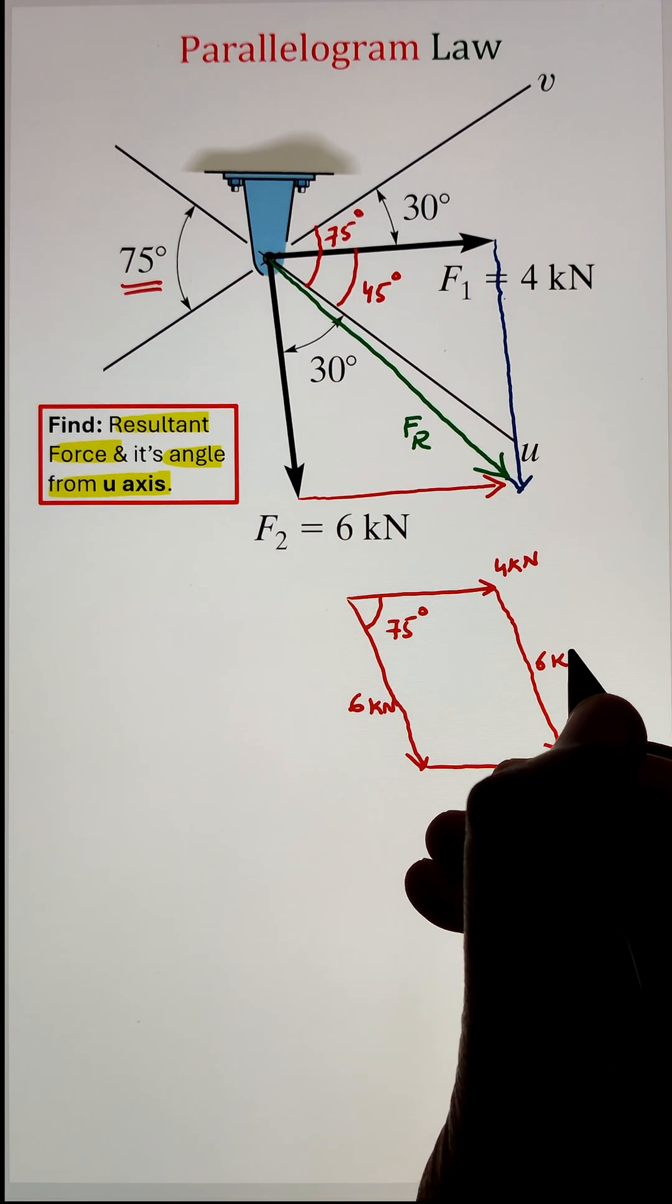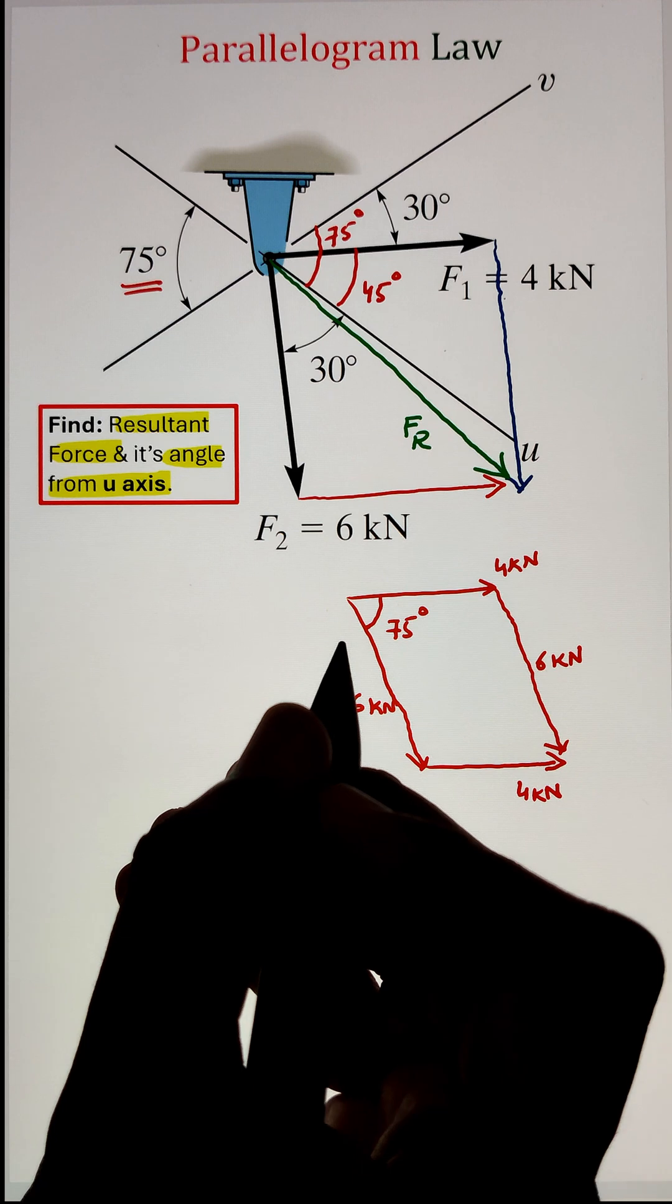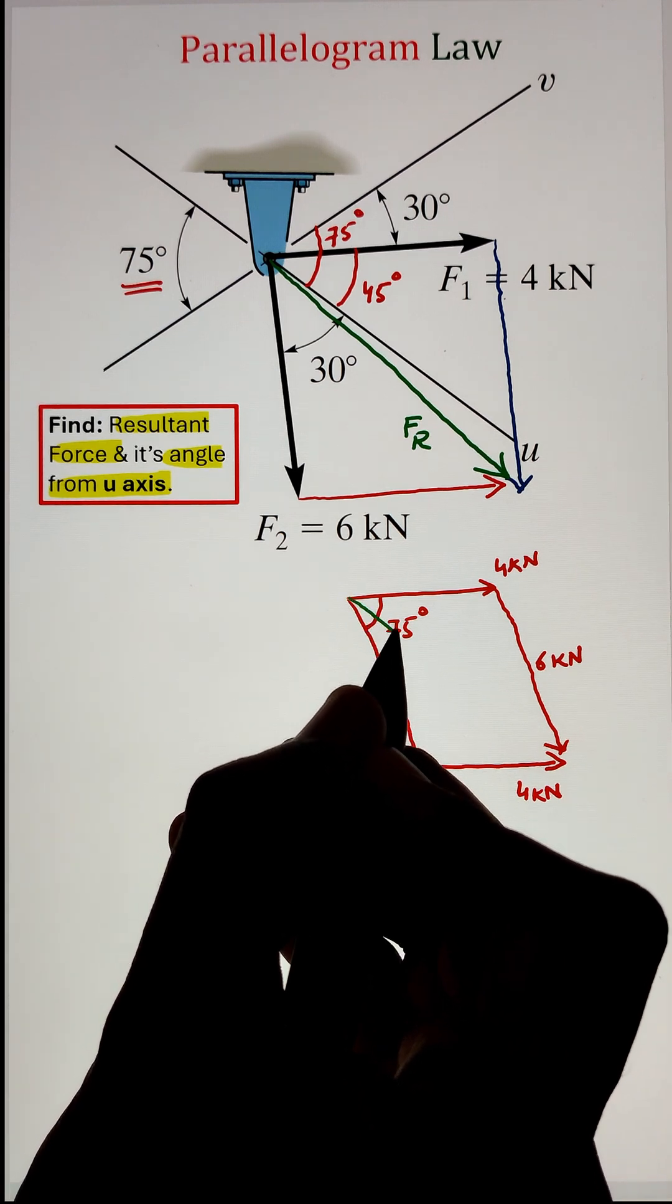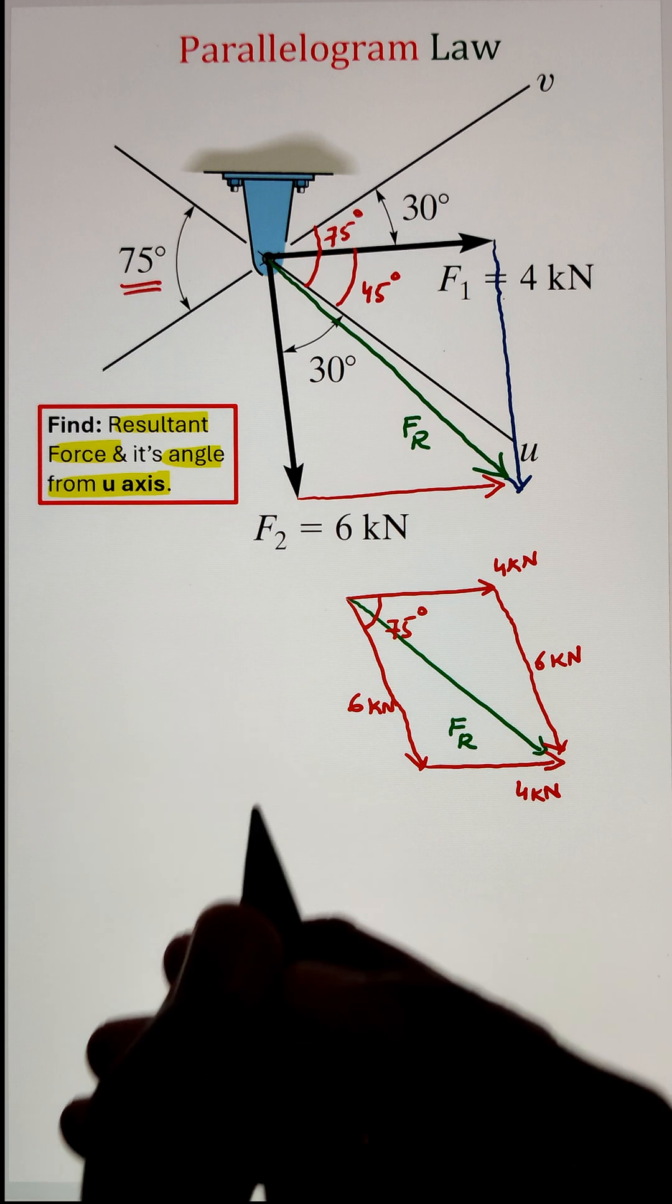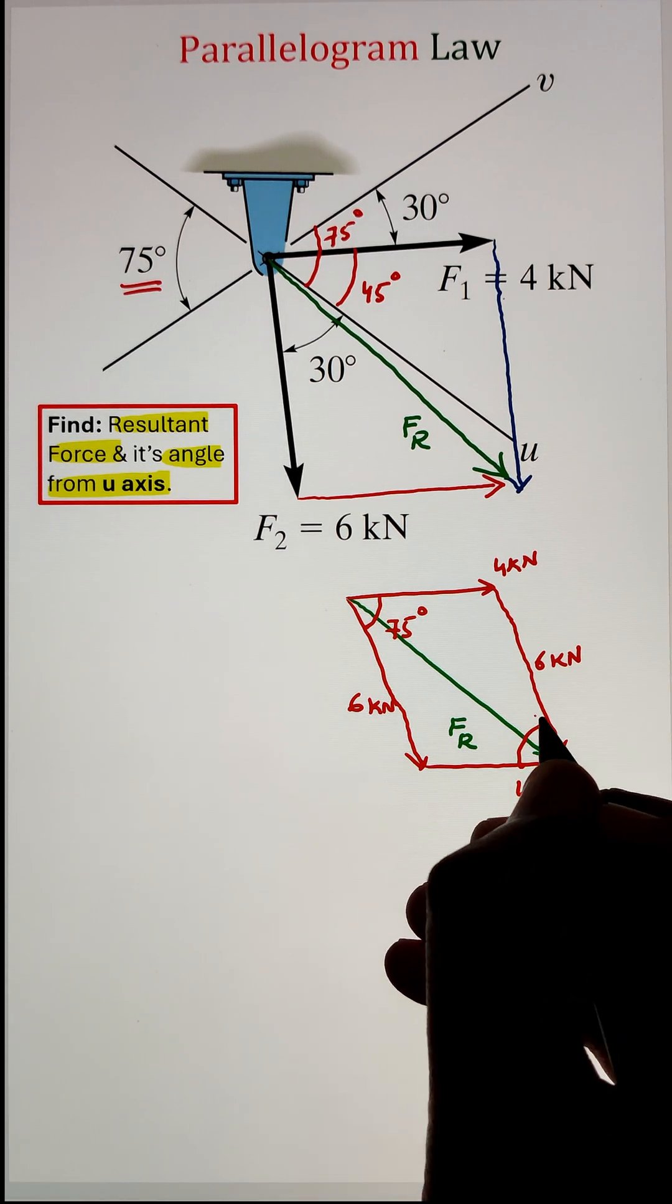Now, once we have identified all the internal angles of the parallelogram, we can go ahead and pick one of the triangles and solve for the resultant force utilizing our law of sine and law of cosine.